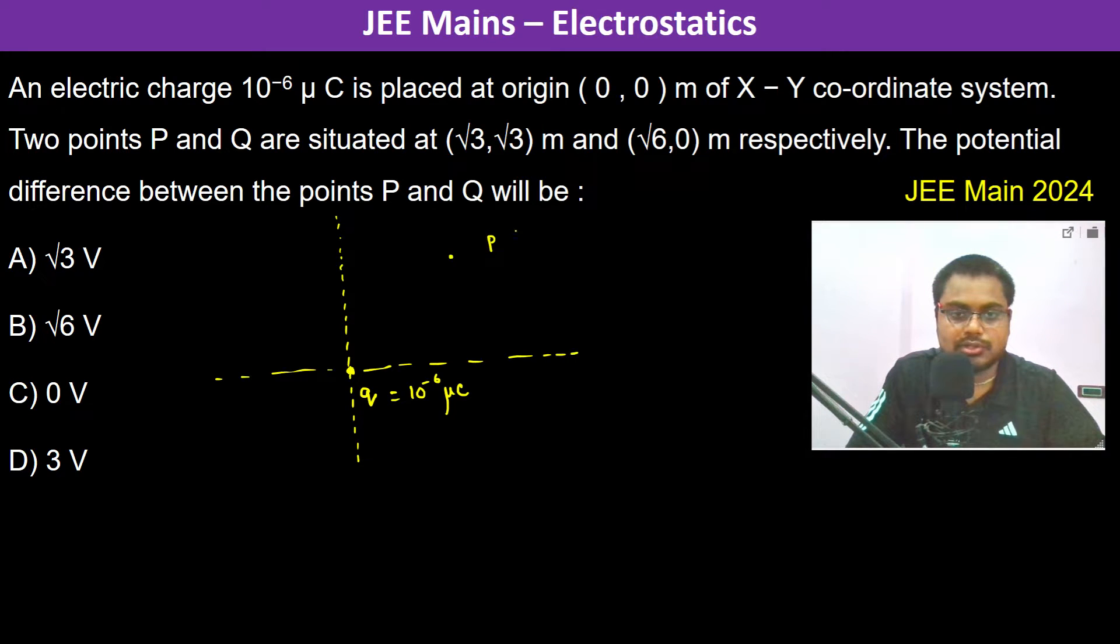And this is root 6 comma 0 which is the Q point. The potential difference between the points P and Q, so here the potential is kq by r1 and here it's going to be kq by r2.